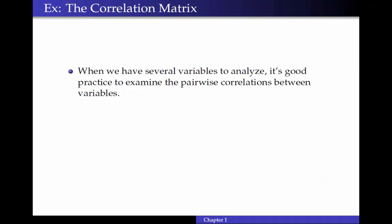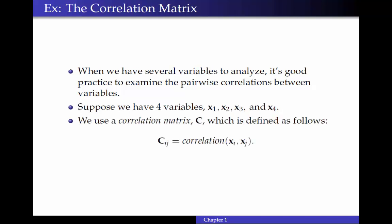When we have many variables to analyze, it's sometimes a good practice to look at the pairwise correlations between variables. And you may have done this already with Dr. LeBar, and you create a correlation matrix. Suppose we have four variables, and we'll just call them x1, x2, x3, and x4. A correlation matrix, we'll call it C, is defined so that the ijth entry of the correlation matrix gives us the correlation coefficient between xi and xj.